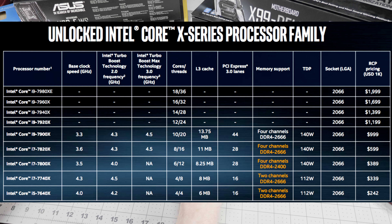Here's Intel's CPU lineup for the X299 platform at launch — the nine SKUs I mentioned earlier. I think only two of these are particular sweet spots, and I'll whiteboard those in a second. The first is the Core i7-7740X, which is badged Core i7 because it has at least quad-core with hyper-threading, but Core i7 has been something of a loose term recently.